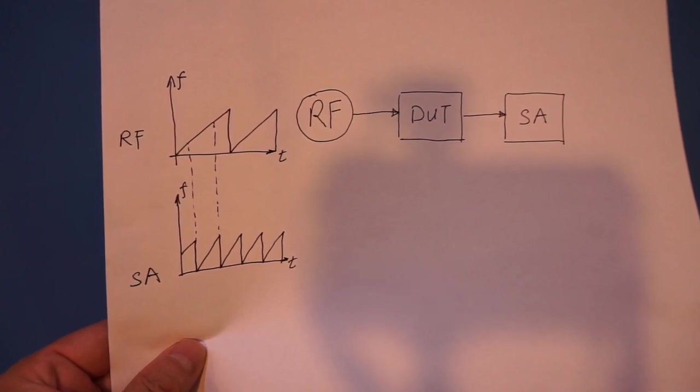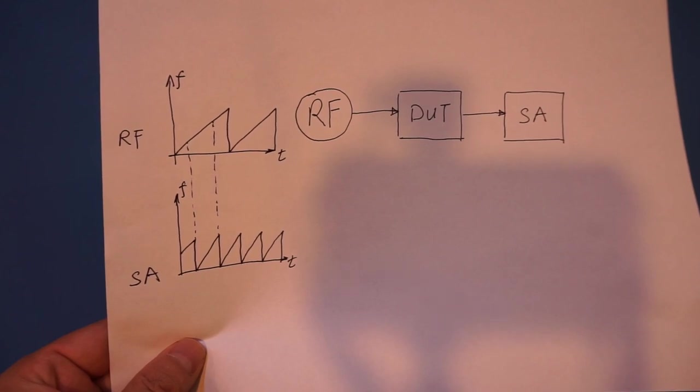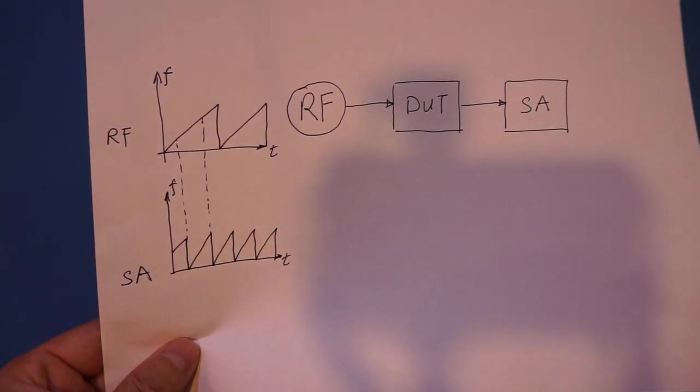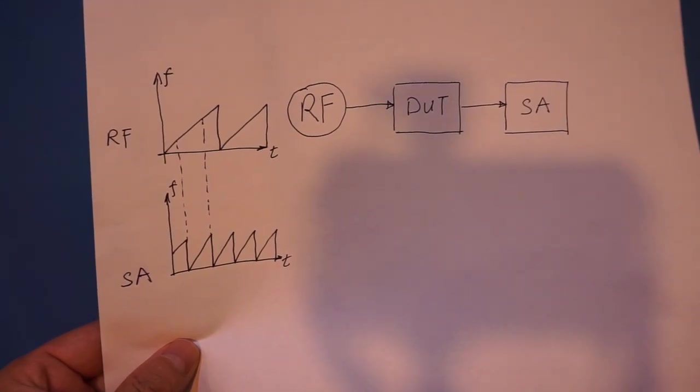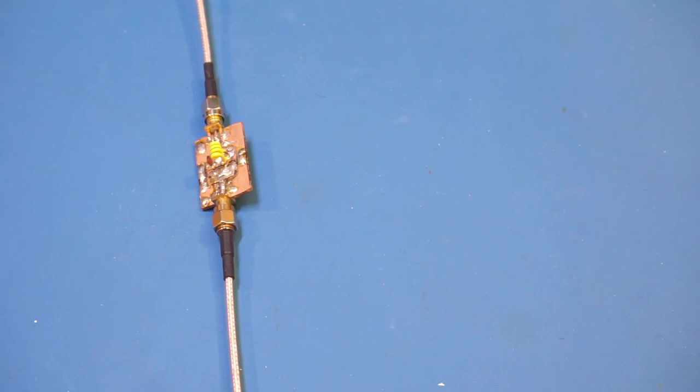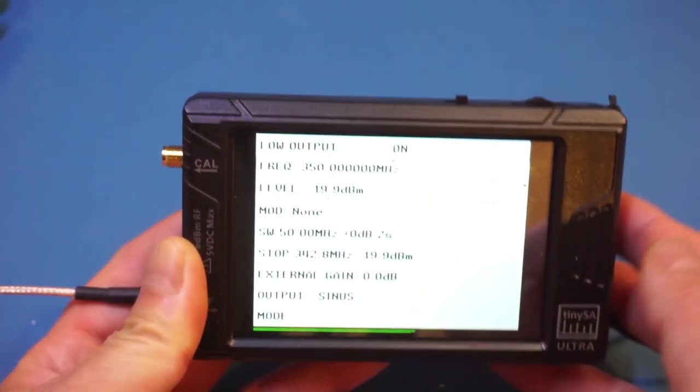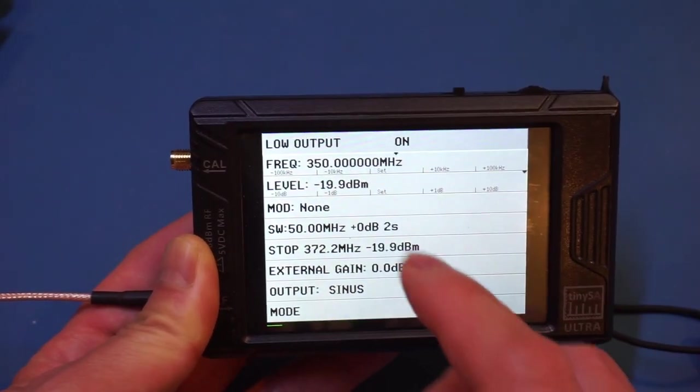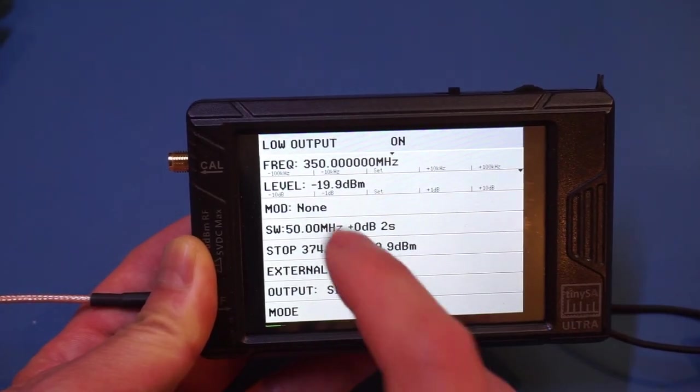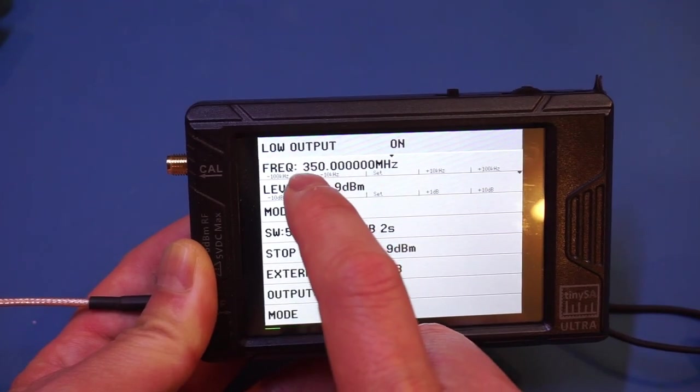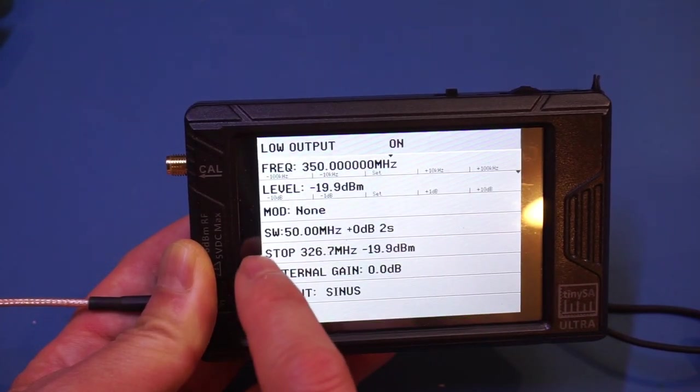Let me quickly demonstrate how to use this technique to measure the frequency response of a filter. Here we have a simple LC filter. Its resonant frequency is at around 340 MHz. And I have set up a sweep between 300 and 400 MHz. You can see that is on this TinySA output. The center frequency is 350 MHz with a frequency span of 50 MHz. And now it's doing the sweeping.